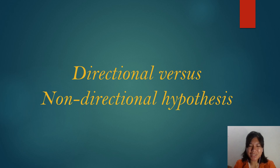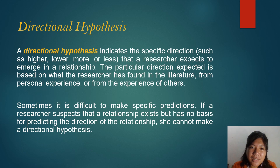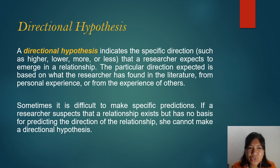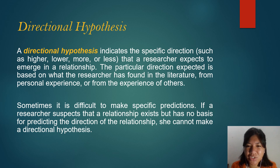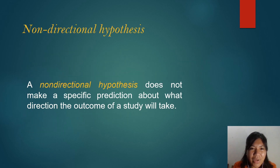Now for the last learning objective: directional versus non-directional hypotheses. A directional hypothesis indicates the specific direction — such as higher, lower, more, or less — that a researcher expects to emerge in a relationship. The particular direction expected is based on what the researcher has found in the literature, from personal experience, or the experience of others. A non-directional hypothesis does not make a specific prediction about what direction the outcome of a study will take.